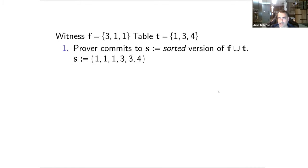Let me give you just a simple example of the simplified, less efficient version of the lookup protocol. Say for example, our witness was 3, 1, 1, and our table was 1, 3, 4. In this case, our claim is true - the values of F are contained in the values of T. So how will we prove this?